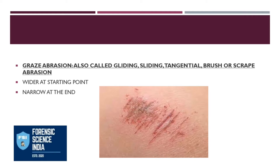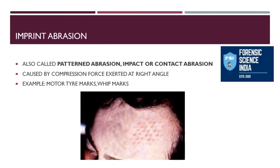Imprint abrasions are also called pattern, impact, or contact abrasions. These are formed whenever a certain amount of pressure is exerted by another body, often leading to formation of impact or print patterns on the surface of the body. The compression force in such cases should be exerted only at right angles. Examples are motor tire marks and whip marks. The medical legal significance is to determine what kind of weapon was used, its pattern or design, and especially in hit-and-run cases, tire marks on the body are important evidence. Whip marks are significant in domestic violence, child abuse, or custodial death cases.